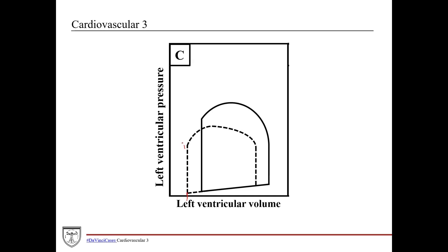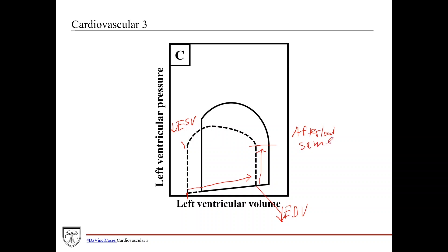If you'll notice here, right off the bat, the end systolic volume is decreased — it's less than the normal end systolic volume. As we move through filling, the end diastolic volume is also decreased. Moving through isovolumetric contraction, it's about the same — maybe a little bit decreased, but not significant enough to say that the afterload is changed. So the afterload is about the same.